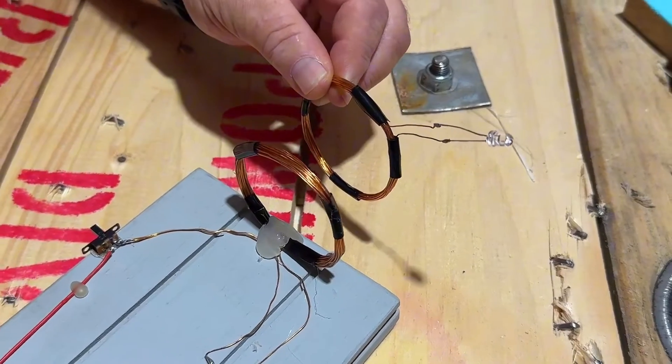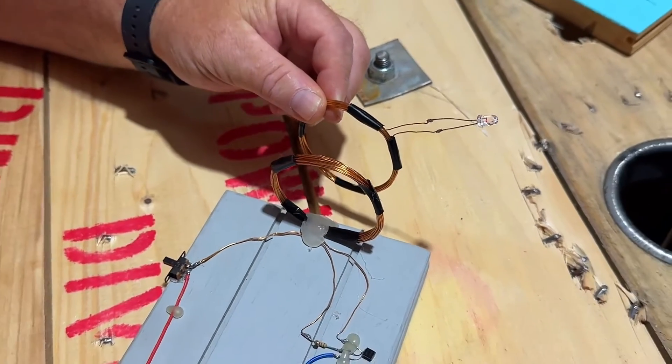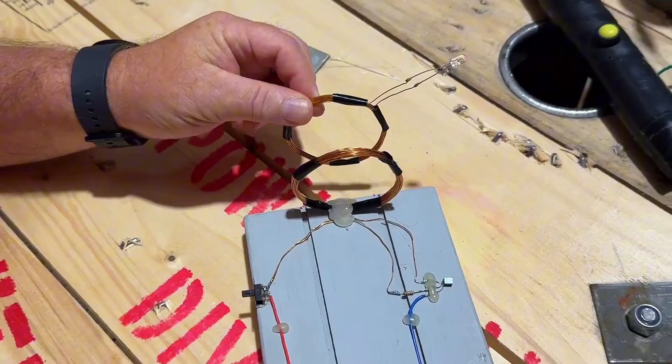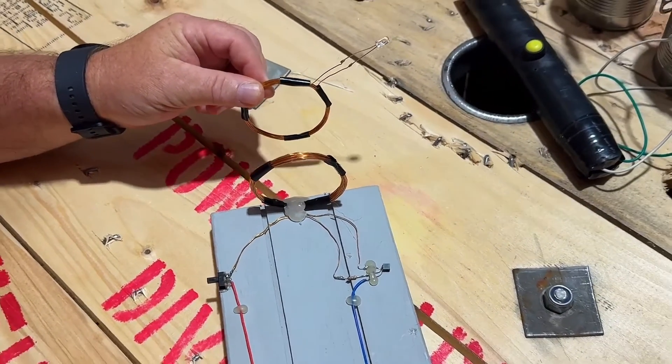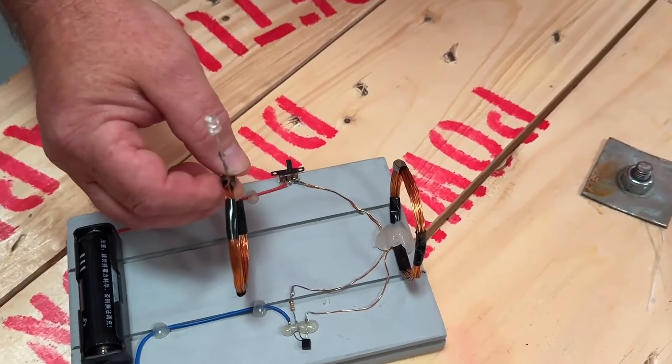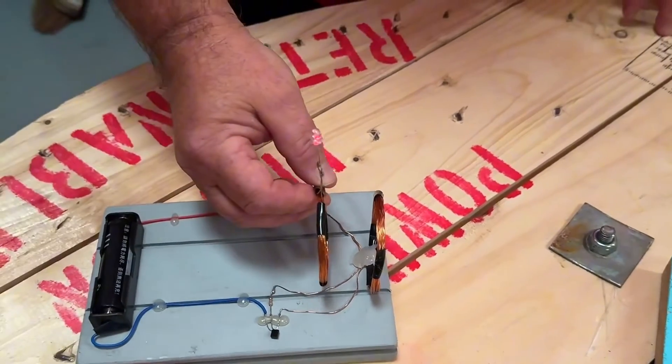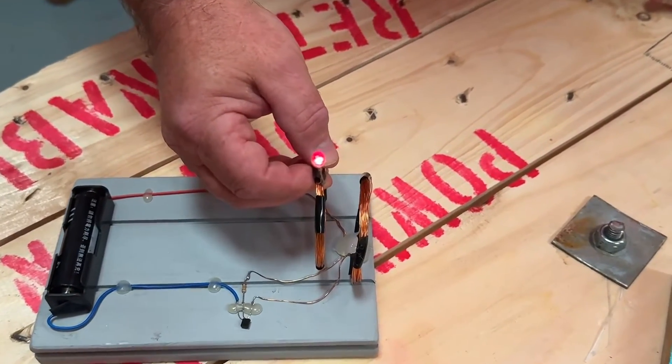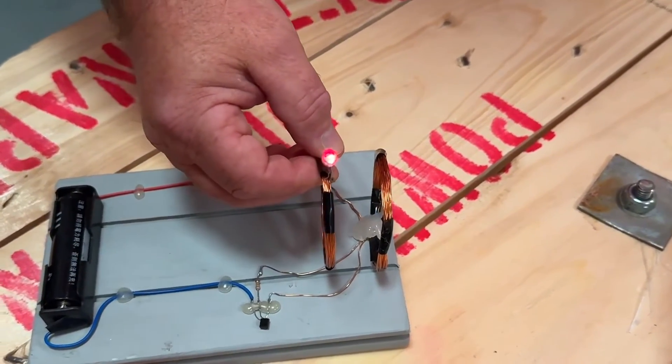Yes, similar principle—mutual induction—where the coil in my hand is actually picking up the fluctuating magnetic field given off by the stationary coil. We've just turned off the lights to give you a better understanding of what's happening, and we can clearly see now that the LED light is illuminated.